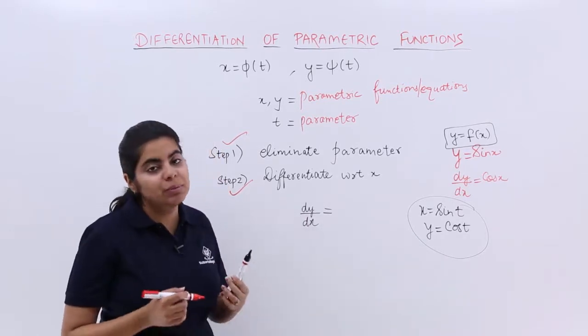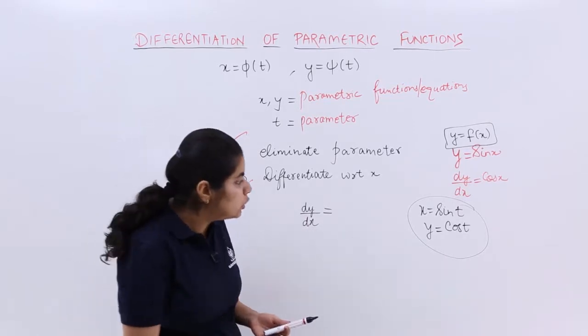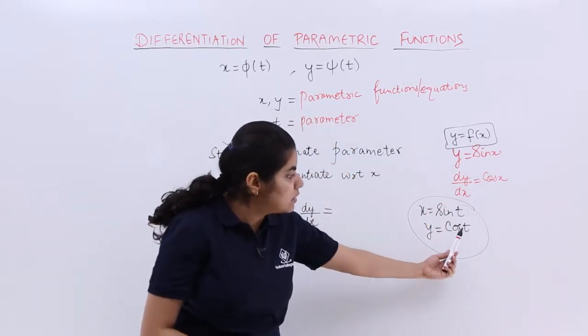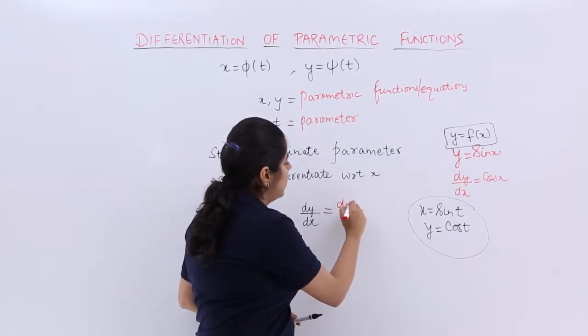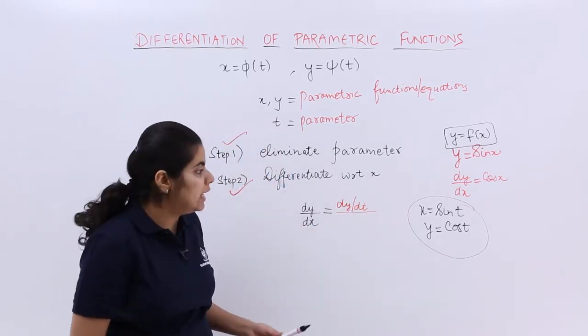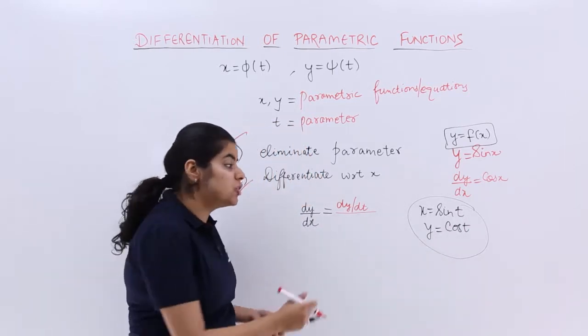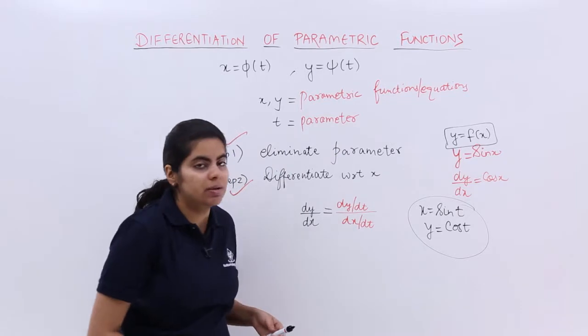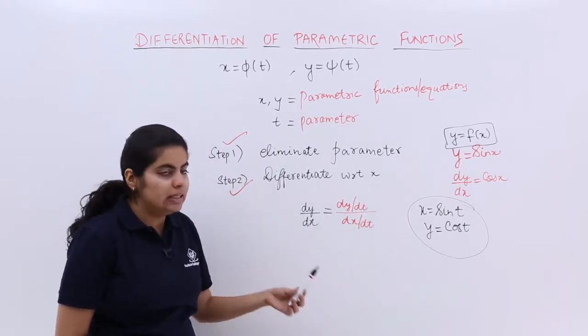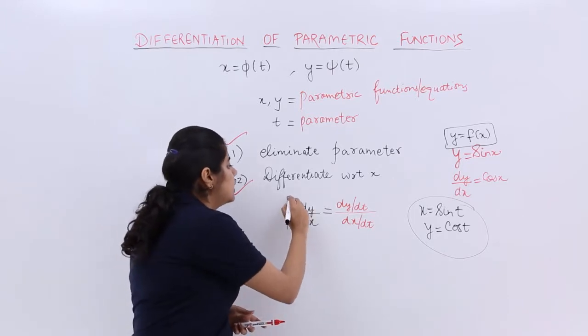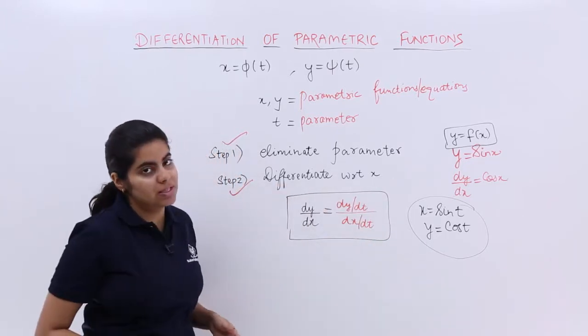So dy by dx will be basically equal to what? You have to differentiate this y also and x also. y is a function of t so you will be finding out dy by dt upon dx by dt. For dx you have to differentiate x with respect to t, and you see that dt and dt cancel out. So that is why we are able to find dy by dx from this method.